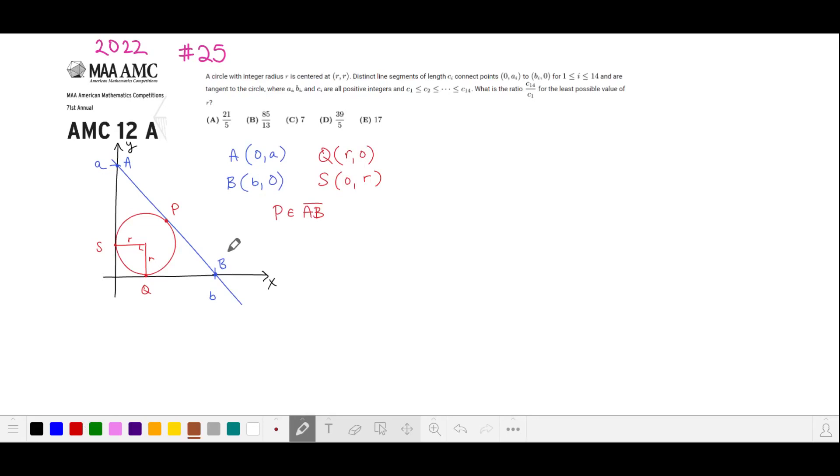Notice that we have two lines passing through point B that are tangent to our circle, BP and BQ. The distance from B to P is the same as the distance from B to Q. The distance from B to Q is the difference in the X coordinates of our points B and Q. That's B minus R. Similarly, we have two lines passing through point A that are both tangent to our circle. So we have AP is equal to AS.